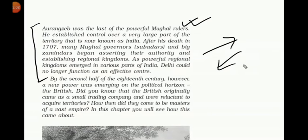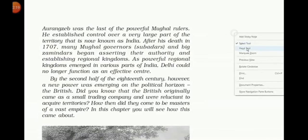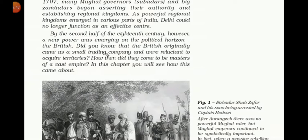Our first topic of this chapter is East India Companies Come East. In 1600, the East India Company acquired a charter from the ruler of England. Queen Elizabeth I granted it the sole right to trade with the East, meaning only the East India Company from England could trade in India. This means that no other trading group in England could compete with the East India Company.